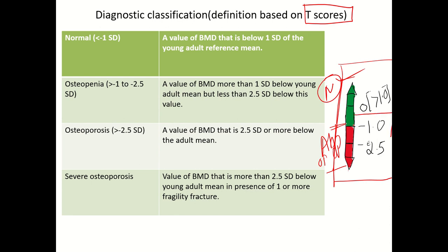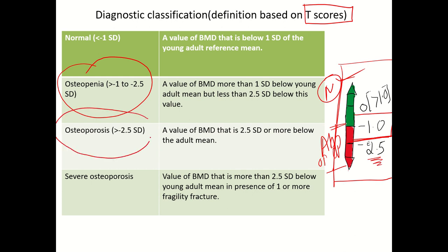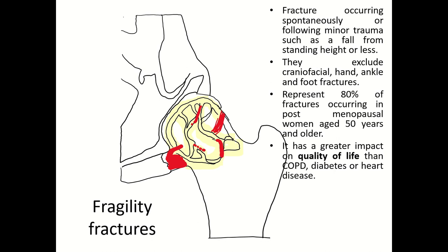If the T-score lies between minus one and minus two point five, the person has osteopenia. If the T-score is equivalent to minus two point five or lesser than that, the subject is highly osteoporotic — it is very severe. A T-score below minus two point five is the most serious classification.